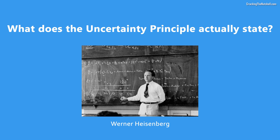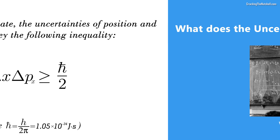Alright, so now that we've seen the uncertainty principle in action, let's find out what it actually states. Heisenberg's uncertainty principle asserts that in any system, in any state, the uncertainties of position and momentum obey the following inequality. Which states that the product of the uncertainty in position and the uncertainty in momentum is always larger than or equal to this other quantity, h-bar over 2, where h is Planck's constant.